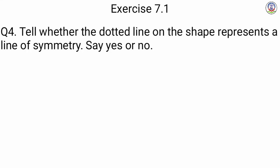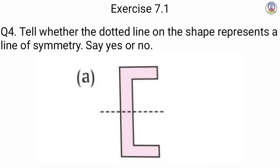Next is question number 4: Tell whether the dotted line on the shape represents a line of symmetry — say yes or no. हम लोग को बताना है कि जो dotted line shapes के ऊपर draw की गई है, वो line of symmetry को represent कर रहे हैं कि नहीं. For A, the figure is cut by a line of symmetry at the center into two equal halves — horizontally — so हम लोग इसके लिखेंगे yes.